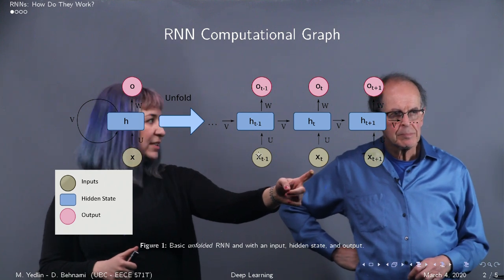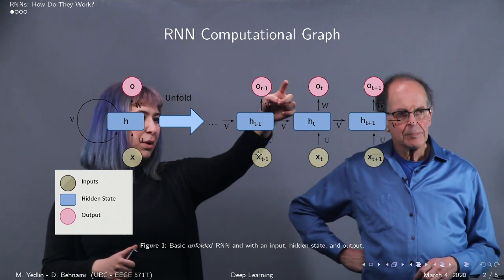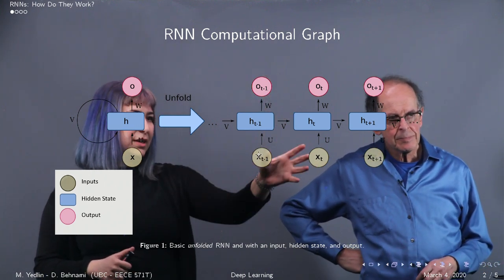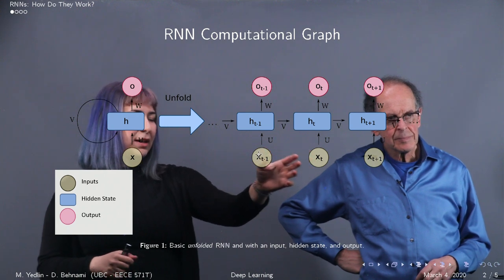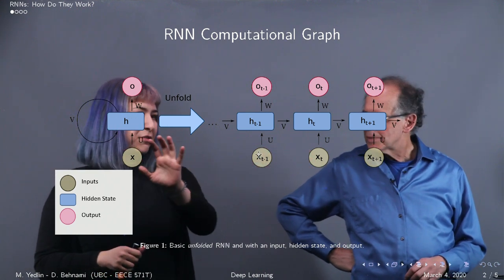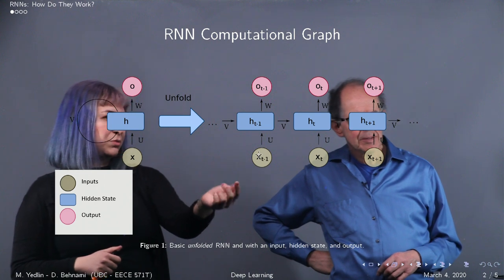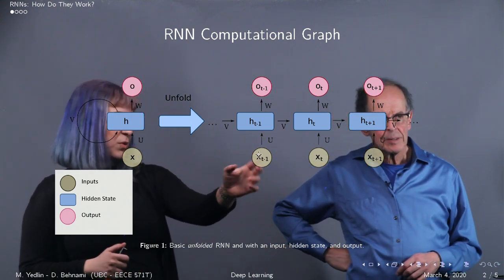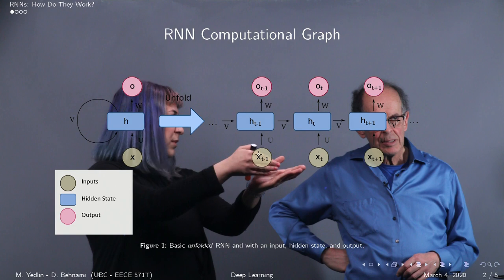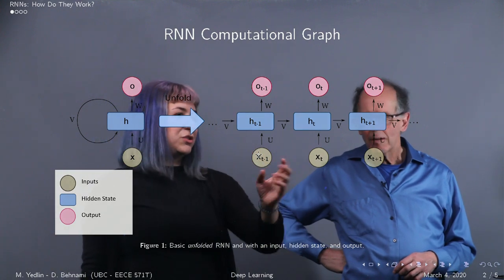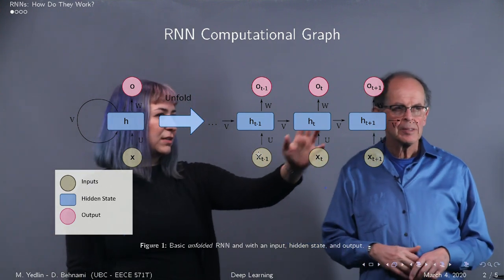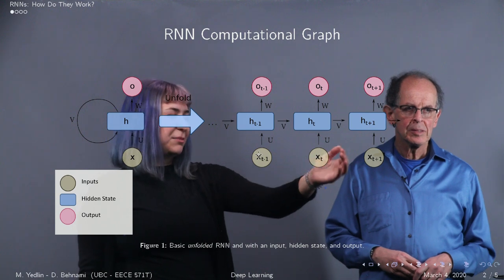So for time step t, you have x of t, o of t, inputs and outputs, the hidden state. And then also you have information from the previous step, which would be x t minus 1 and its hidden state feeding into h of t. And then that is used to predict, recursively predict the h plus t, h of t plus 1.